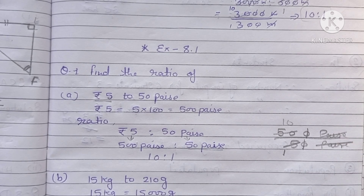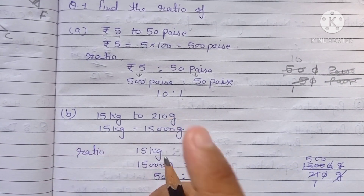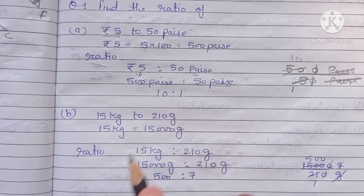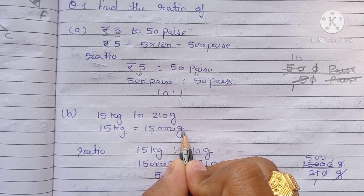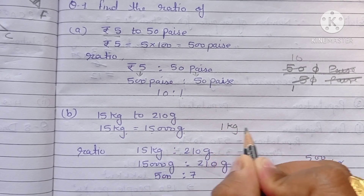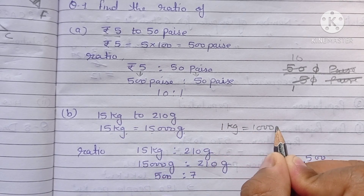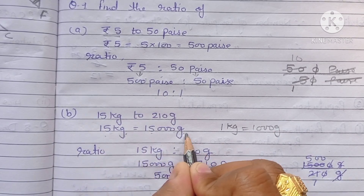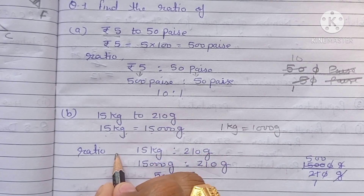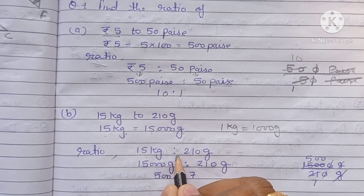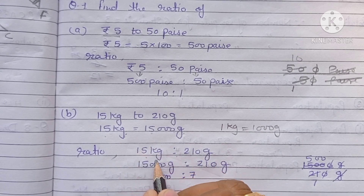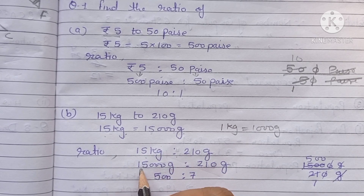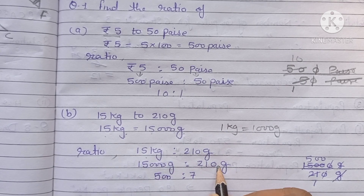Part B: 15 kg to 210 g. First we convert: 15 kg equals 15,000 g. So the ratio is 15,000 g to 210 g.